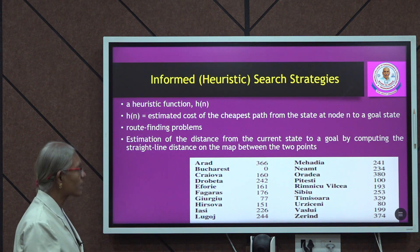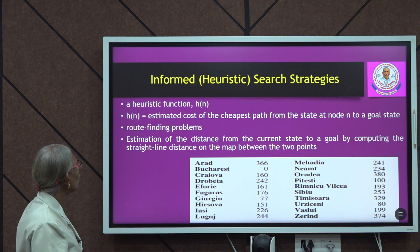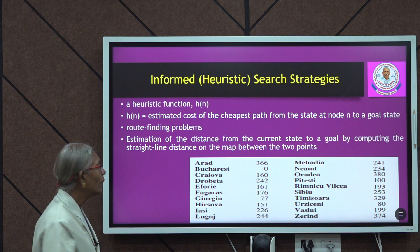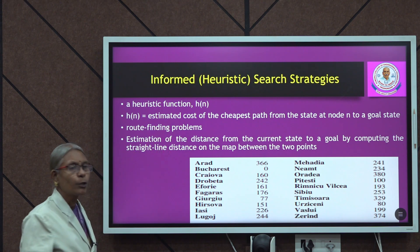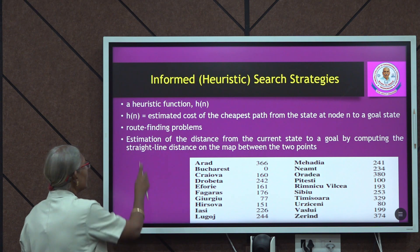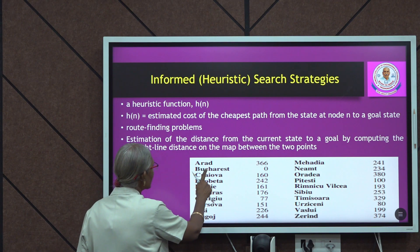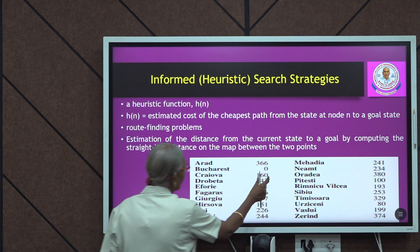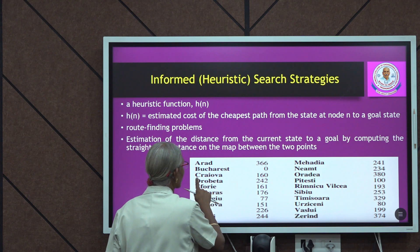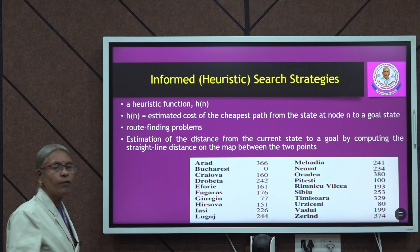Another category is informed search, also called heuristic search. A heuristic function h(n) is used, which gives the estimated cost of the cheapest path from the state at node n to a goal state. This is useful in route-finding problems, where we estimate the distance from the current state to the goal — for example, by computing the straight-line distance on the map. Taking the same Romania example of reaching Bucharest from Arad, we have distance values such as Bucharest to Arad: 366, Bucharest to Craiova: 160, and so on, which are used to compute the heuristic function.